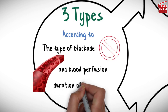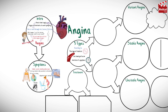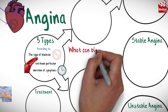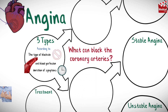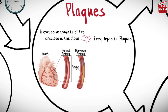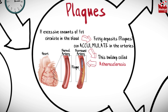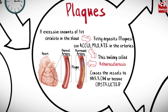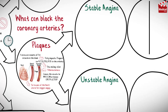Angina is classified into three types according to the type of blockade, blood perfusion, and duration of symptoms: stable, unstable, and variant angina. Coronary arteries may be blocked by plaques or spasm. If excessive amounts of fat are circulating in the blood, fatty deposits called plaques can accumulate in the arteries — a buildup called atherosclerosis — causing vessels to narrow or become obstructed, starving heart tissues of oxygen. This type of blockade is involved in stable and unstable angina.